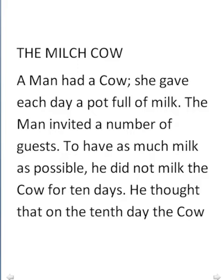The Milch Cow. 'A man had a cow.' We'll be doing a grammar analysis because without a grammar analysis we can't understand the sentence perfectly. 'A man had a cow' — we have 'had' there because in the past 'have' becomes 'had'. She — that means the cow — 'gave'; 'give' becomes 'gave' in the past. Each day a pot full of milk.